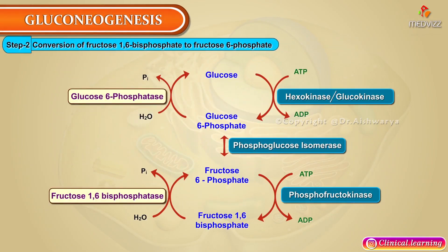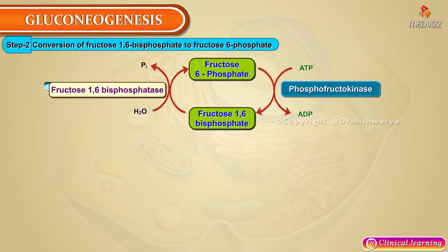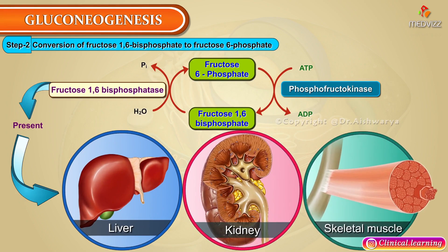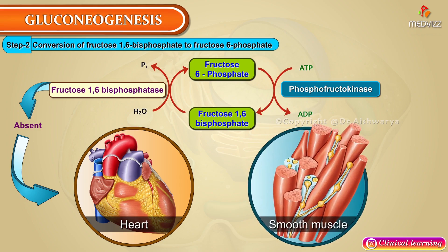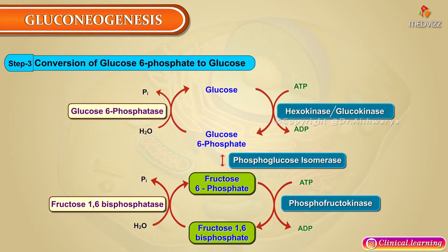In the cytosol, oxaloacetate is converted to phosphoenolpyruvate by phosphoenolpyruvate carboxykinase (PEPCK). Bypass reaction 2: conversion of fructose 1,6-bisphosphate to fructose 6-phosphate is catalyzed by fructose 1,6-bisphosphatase. This enzyme is present in liver, kidney, and skeletal muscle, but absent in heart and smooth muscle.